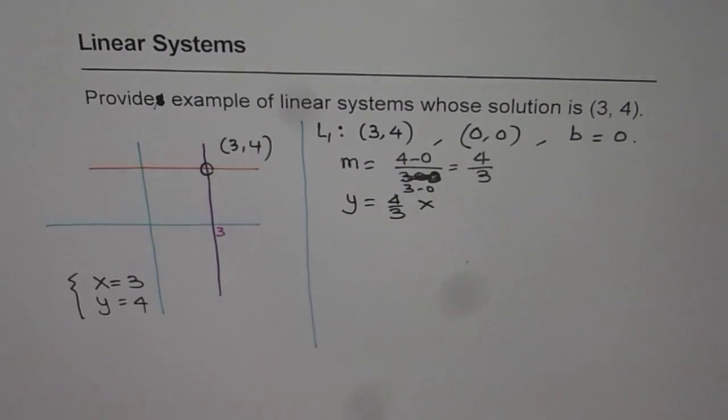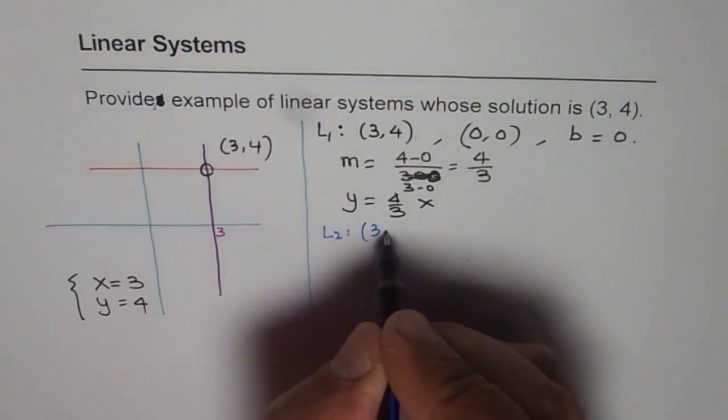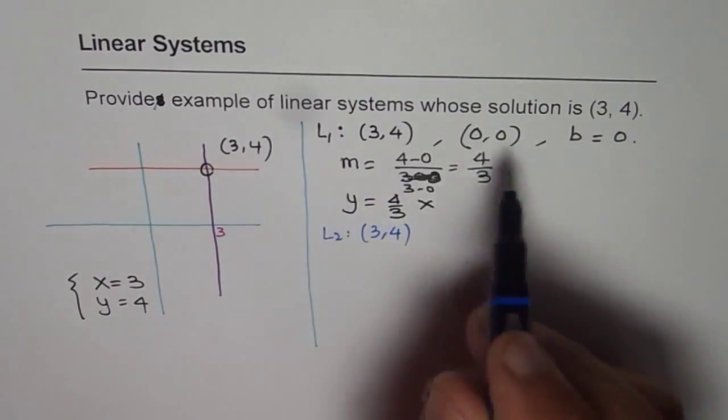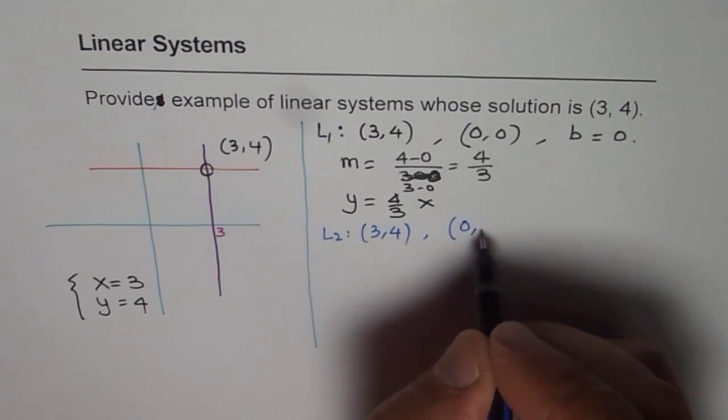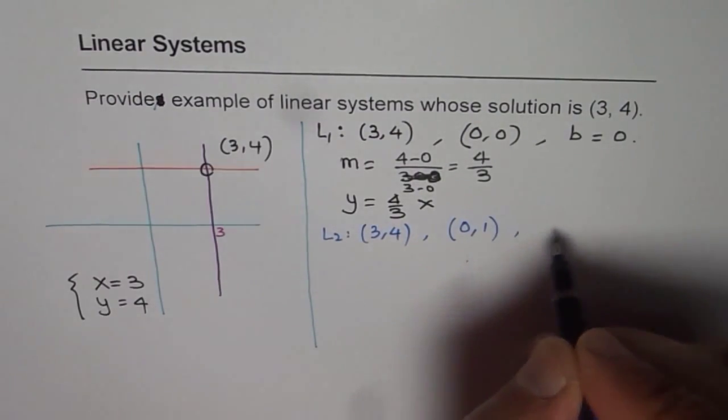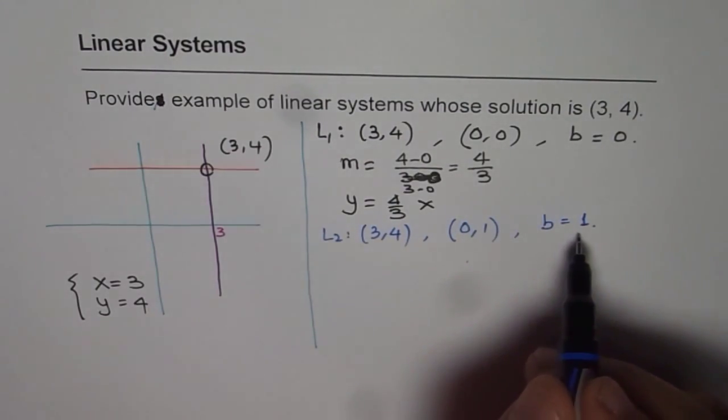Now, we can find the equation of the second line. Let's say the second line has the point (3, 4). It has to have that point, since that is the solution. And let another point be (0, 1), that is y-intercept of 1. So I am selecting a point so that we have to do least calculations.